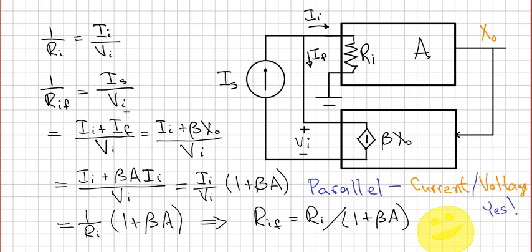So using Kirchhoff current law at this node right here, you can see that IS is equal to II plus IF, and IF is equal to beta times X out right here. II times A should give me X out. So when I plug in the A times II for the X out, I end up with this expression here.